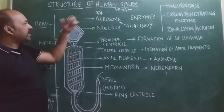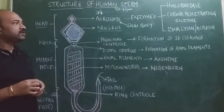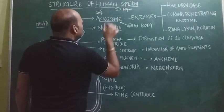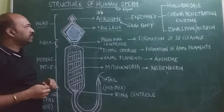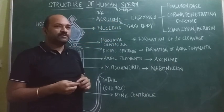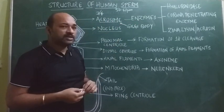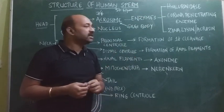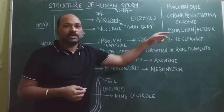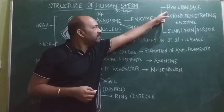The acrosome is necessary because it helps the sperm to penetrate into the ovum. The acrosome consists of a group of enzymes collectively called sperm lysins. These enzymes are: first, hyaluronidase; second, corona penetrating enzyme; and third, zona lysine, which is also called acrosin.